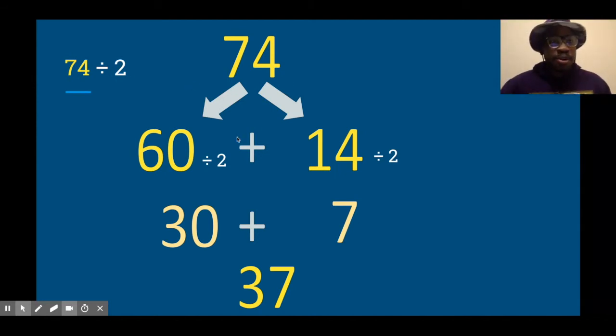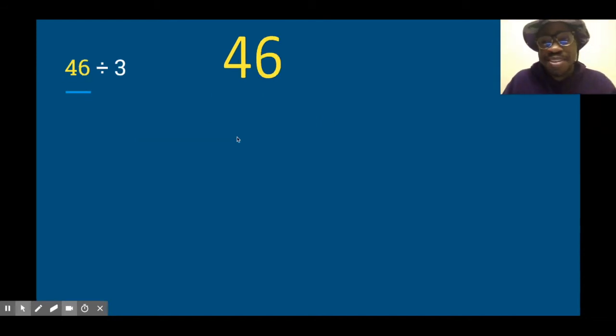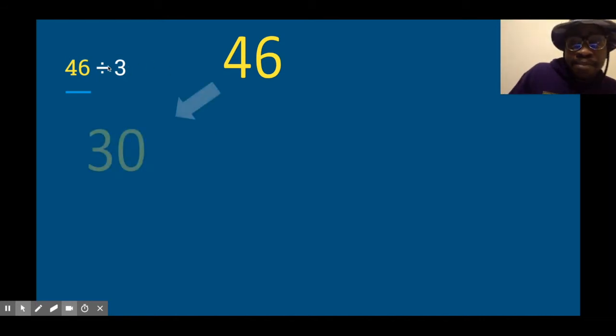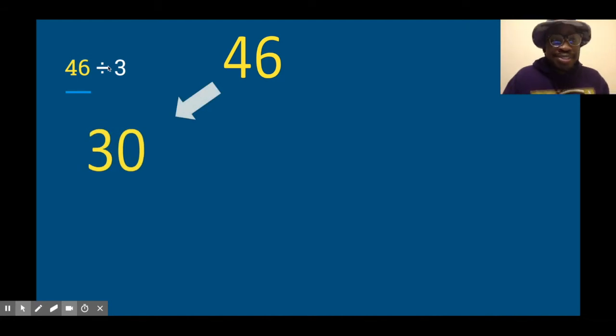All right, this one's going to be a little more challenging. 46 divided by 3. Let's decompose 46 into smaller numbers that are still divisible by 3. So I'm going to pull out 30 first because I know that's easy to divide by 3.